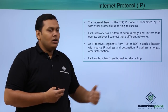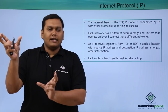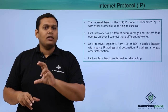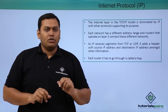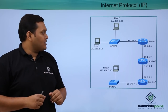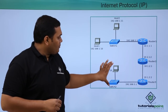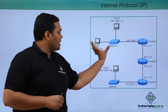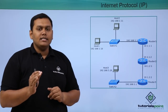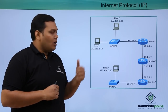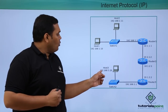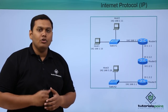Each router a packet passes through is called a hop. You can see 3 routers connected with 6 networks. Switching from one router to another is called a hop count. These 3 routers each connect a separate network. IP addresses are also given to hosts, switches, and routers — for example, host 3 has the IP address 192.168.5.20.